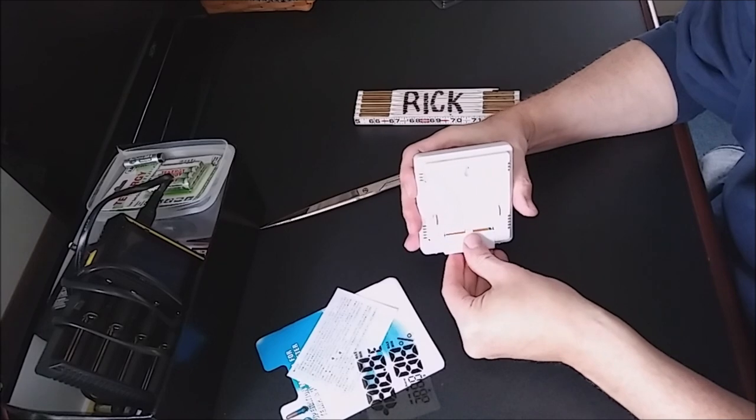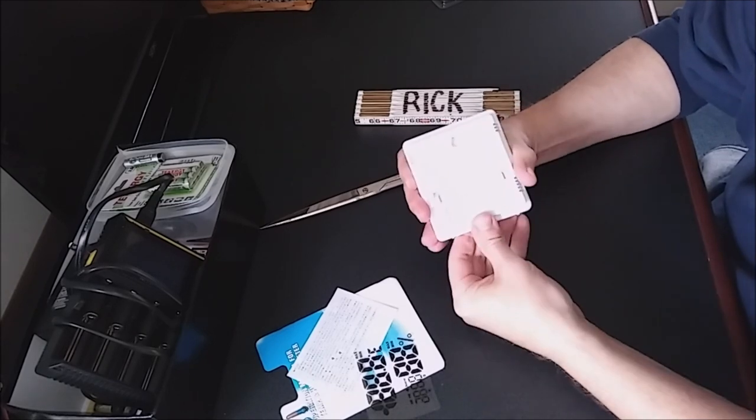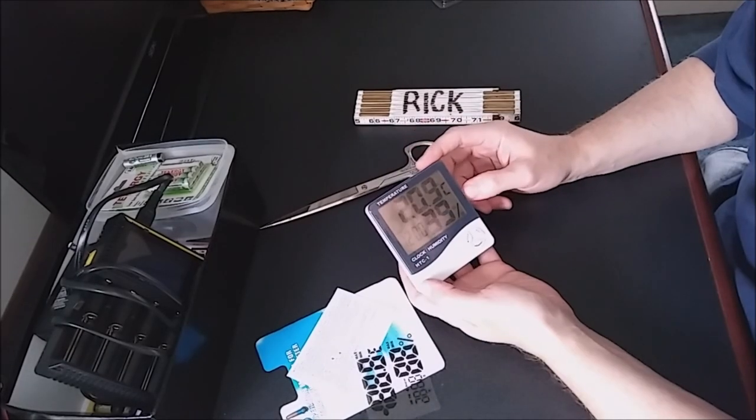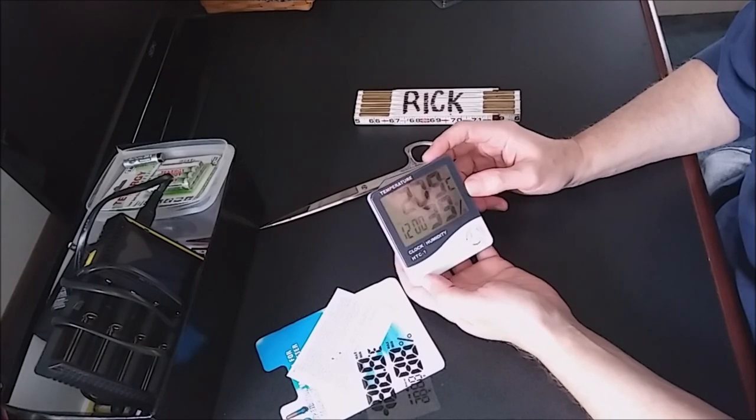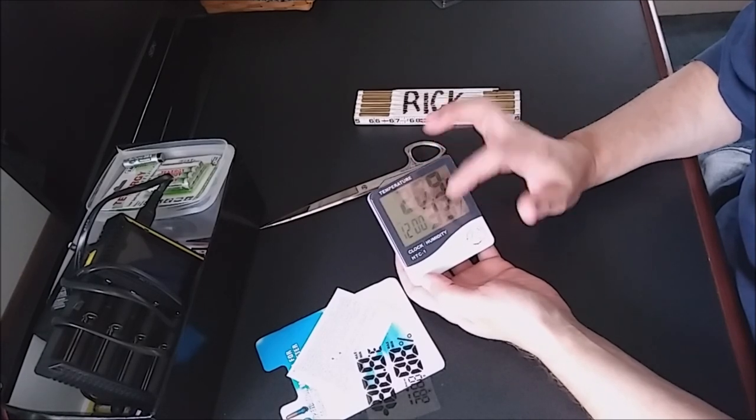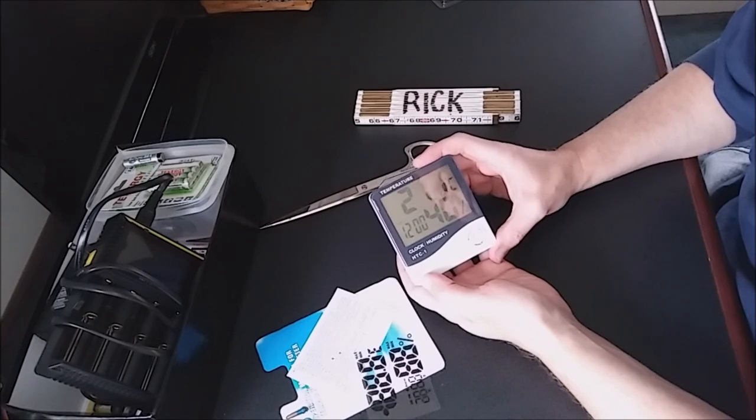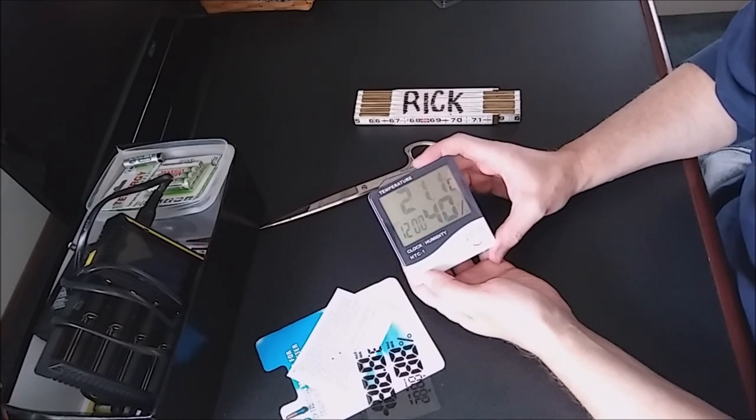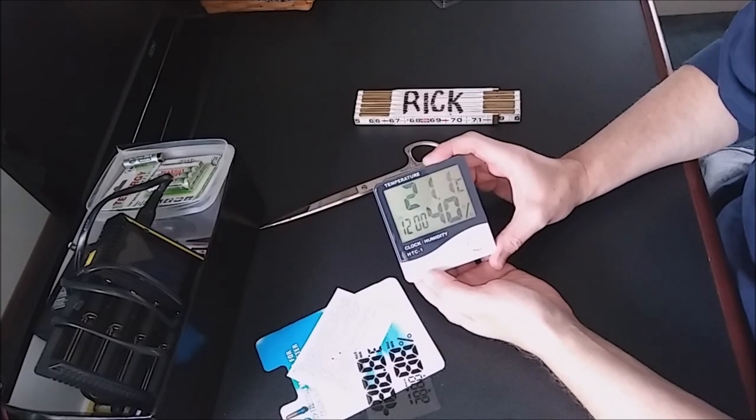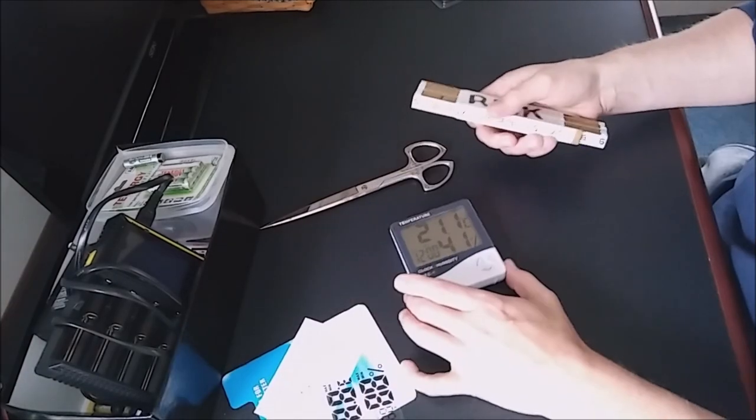So it says it's 20.9 Celsius. It's already got a clock set at 12 AM, and it's saying that the humidity level right now in my home is 40%.